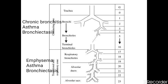Then we have a transitional zone, which we call the respiratory zone, which includes the respiratory bronchioles and terminal bronchioles. There is a transition from terminal bronchioles to respiratory bronchioles, then to alveolar ducts, then alveolar sacs, then individual alveoli. We call this the respiratory zone.